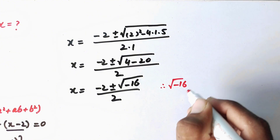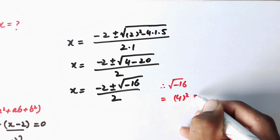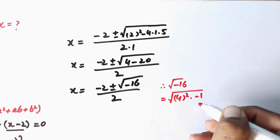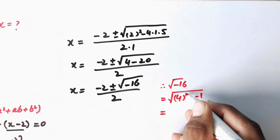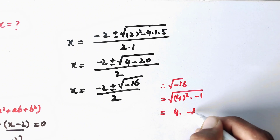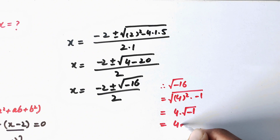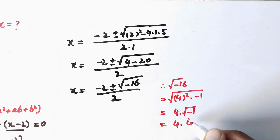We can write square root of minus 16 as square root of (4 squared times minus 1). The 4 squared comes out of the square root as 4, and the square root of minus 1 is iota, so we get 4 iota.